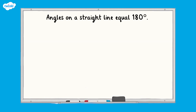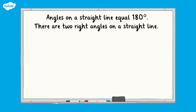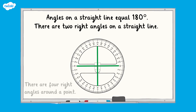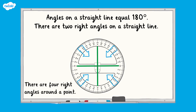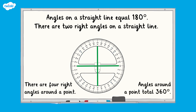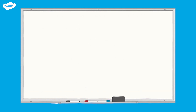So far we have looked at angles on a straight line. We know that there are two right angles on a straight line which equal a total of 180 degrees. As you can see here, there are four right angles around a point and these total to 360 degrees, because 90 multiplied by 4 equals 360. We can use this fact to help us to calculate angles around a point without a protractor.